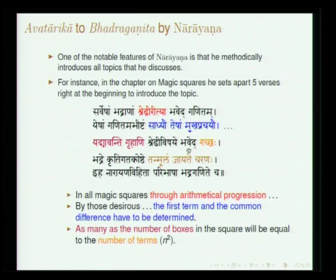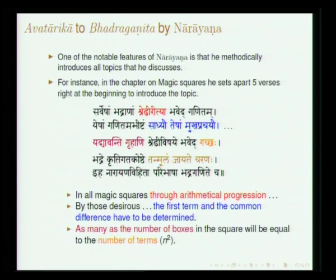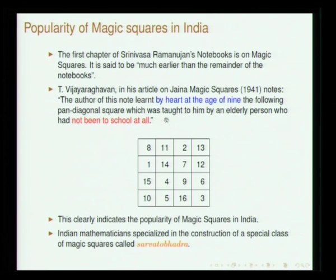'Bhadre kritikata koshthe tanmoolam jayate charanaha' — gacchasyamoolam means in a 4×4 magic square, the number of elements is 16, and the root of that will be the number of rows or columns. That is called charanaha — charanaha is basically a row. Then he says 'iha narayana vihita paribhasa bhadra ganita' — in Kaumudi the first prakarana is called paribhasa prakarana, where all required terminologies have been clearly stated.